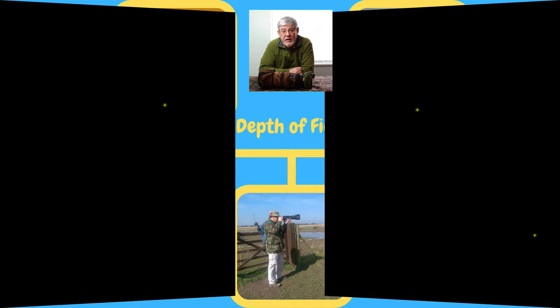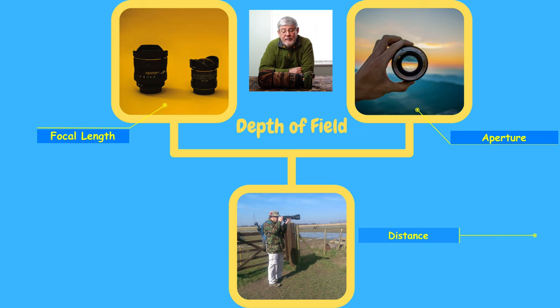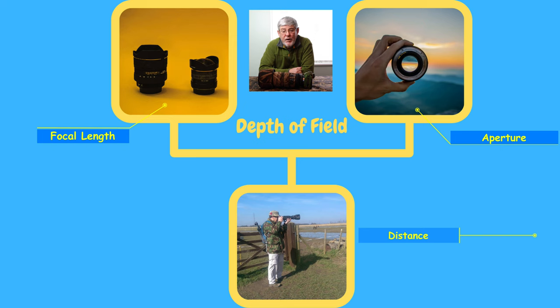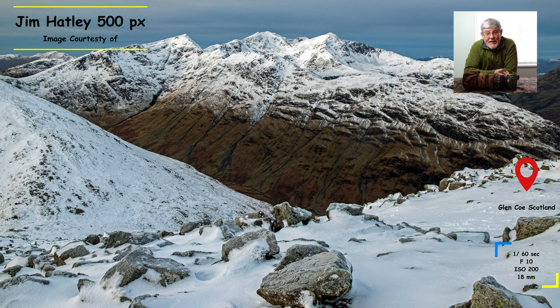There are three things that affect the depth of field: the focal length of your lens, the size of the aperture you're using, and the distance between you and the subject. When it comes to focal length, the longer the focal length, the narrower the depth of field. So on a large lens like my 800mm, I know I'm going to have a narrow depth of field. However, landscape photographers using wider lenses want their image in focus from front to back, so they use wider lenses and produce a wider depth of field.